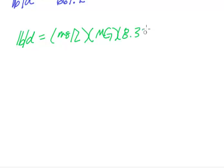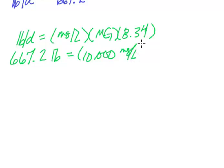That's the missing piece of the puzzle here. I'm going to start with my 667.2 pounds on this side. The milligrams per liter now becomes the RAS concentration, so that's 10,000 milligrams per liter. The total gallons I'm going to waste, I don't know, and then this is times 8.34.